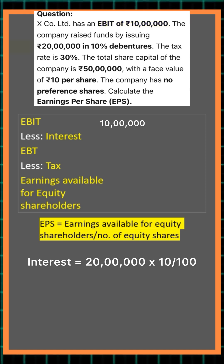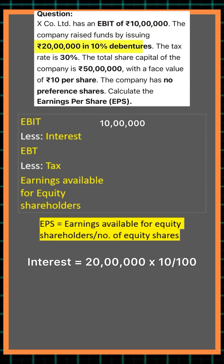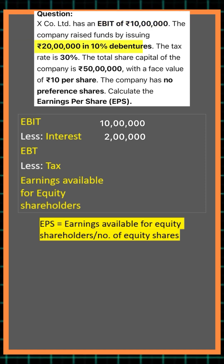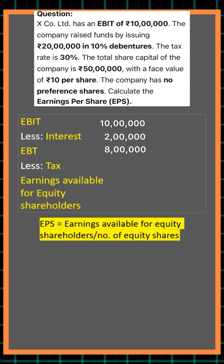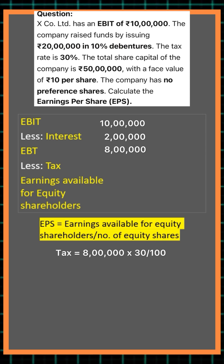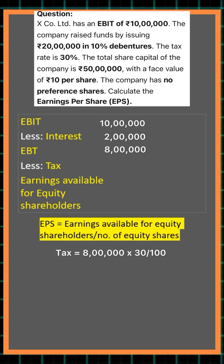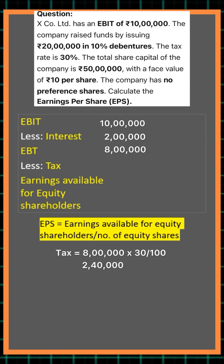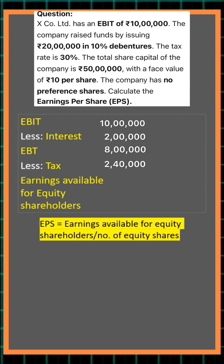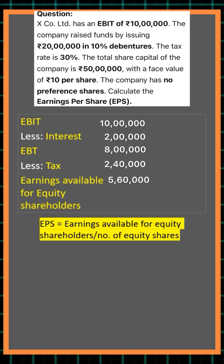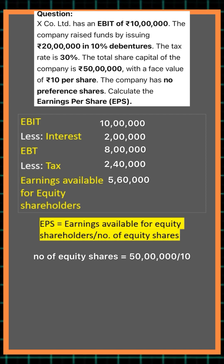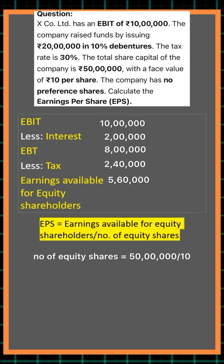Earnings before tax comes out to be rupees 8 lakhs. Deducting tax at the rate of 30 percent, earnings after tax comes out to be rupees 5 lakh 60,000. The number of equity shares is equal to 5 lakhs.